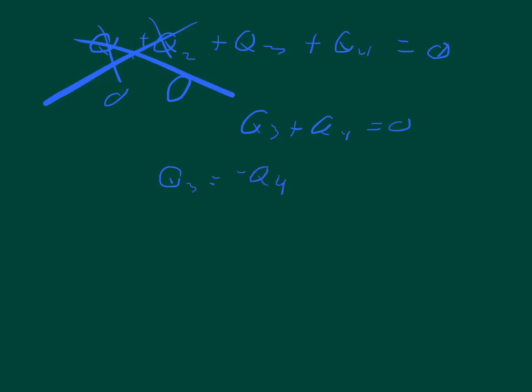And then we can substitute in our definition for Q. So the mass of copper times the specific heat of copper times the change of temperature of copper is equal to the mass of aluminum times the specific heat of aluminum times the change of temperature of aluminum.